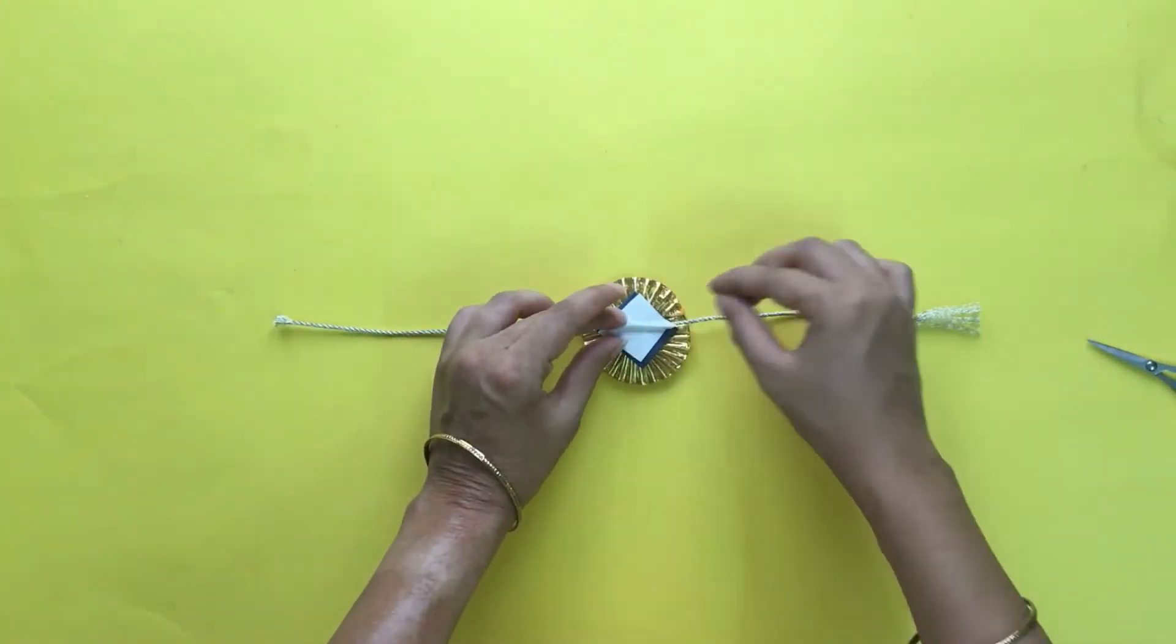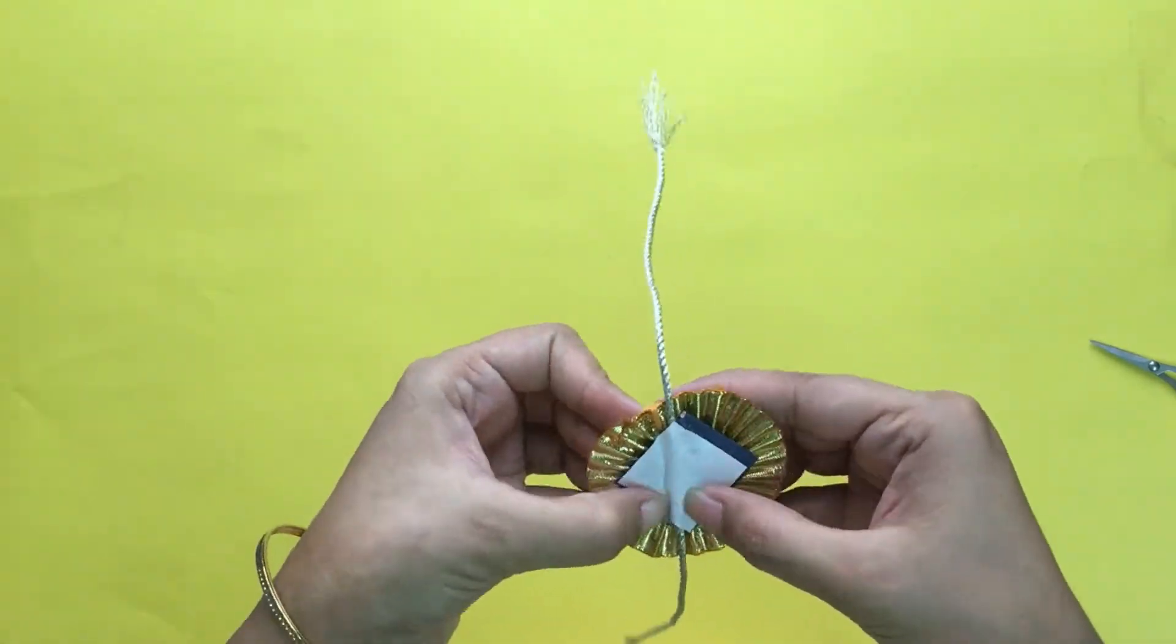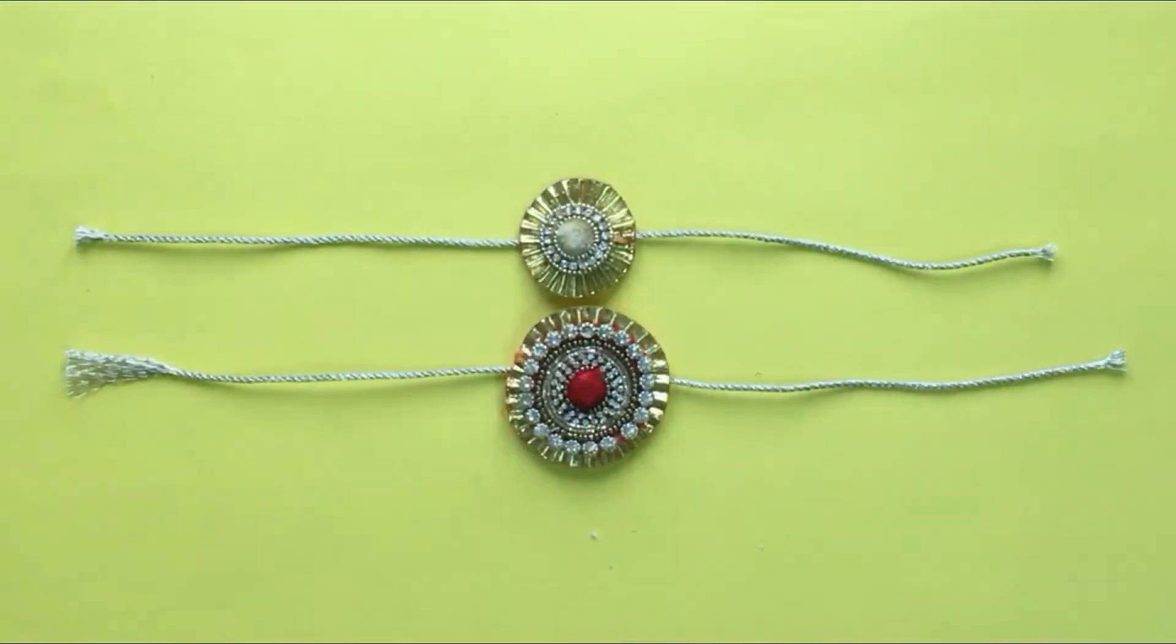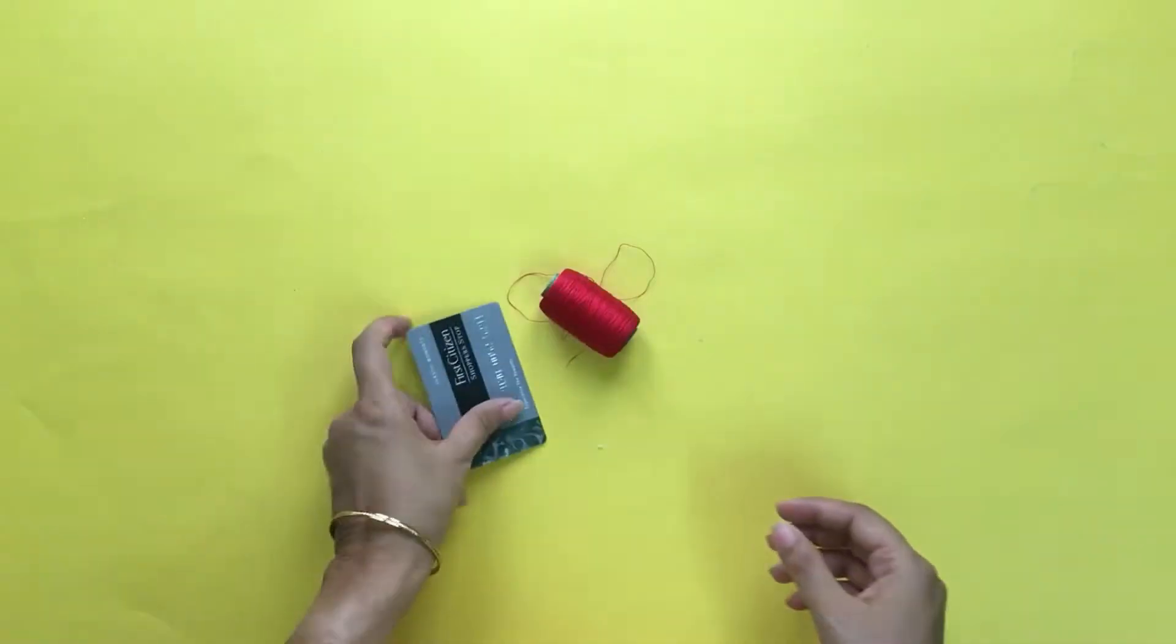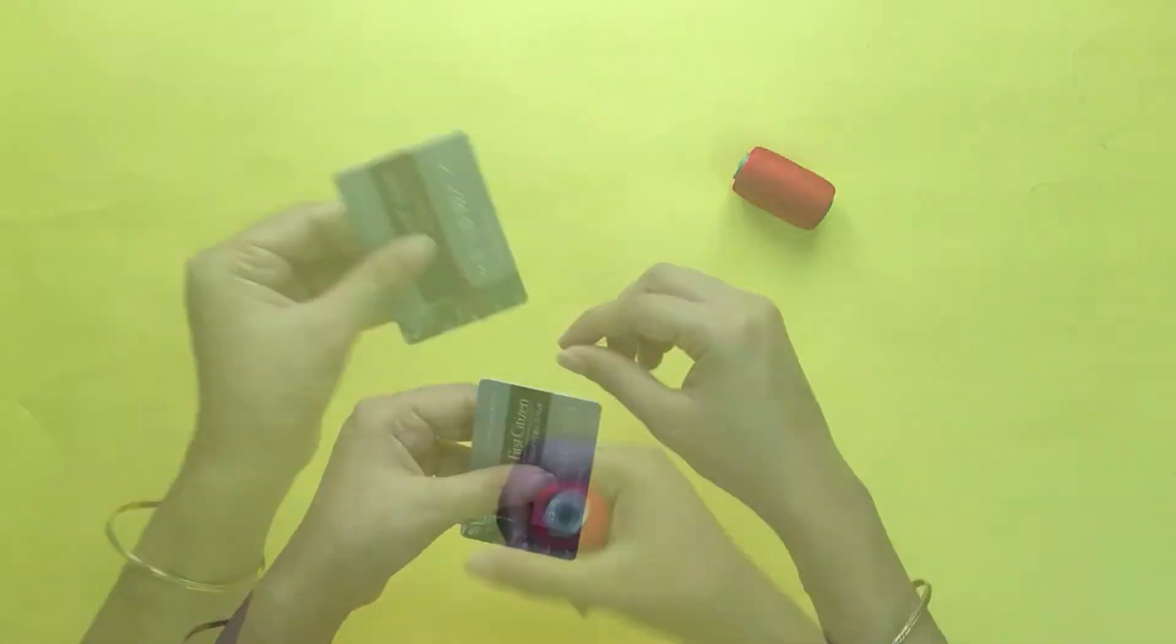As we are done with two Rakhi designs, next step is attaching the tassels to them, for which we would need the silk thread and a credit card. Start wrapping the thread around the card as shown.